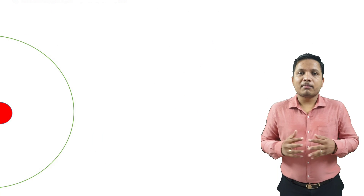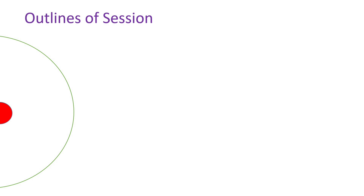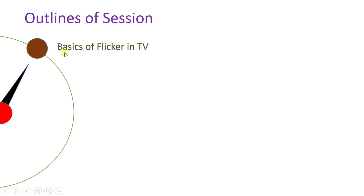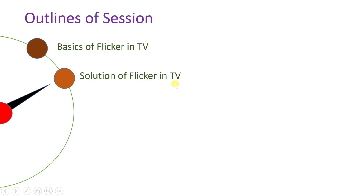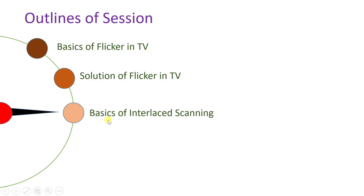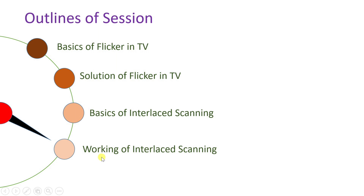To understand this session, here are the session outlines. First, I'll explain the basics of flicker in television. Then I'll cover the solution to flicker in television, which is interlace scanning. We'll discuss the basics of interlace scanning, how it works, and how to calculate the time period for horizontal and vertical scanning.